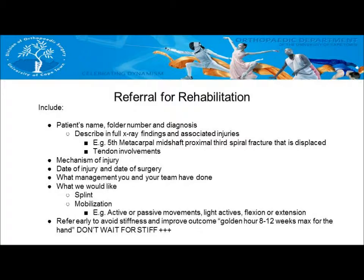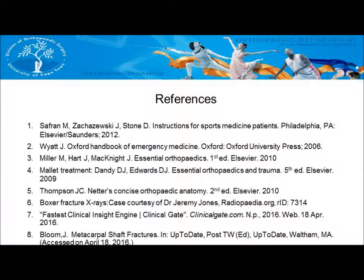When referring for splinting, include the patient's name, folder number, and diagnosis — describing in full the x-ray findings and associated injuries. Include the mechanism of injury, date of injury, and date of surgery if performed, as well as any management already implemented. Specify exactly what you would like done for the patient. It is important to refer early to avoid stiffness and improve outcomes. The golden time frame for the hand is 8 to 12 weeks — do not wait for the patient to become stiff. We hope this video helps you make swift and accurate decisions regarding boxer fracture and mallet finger.